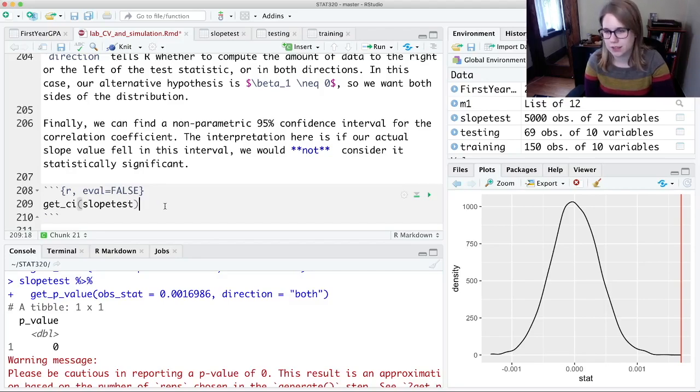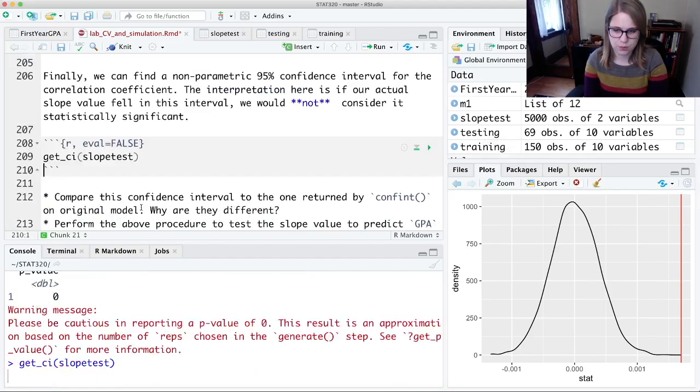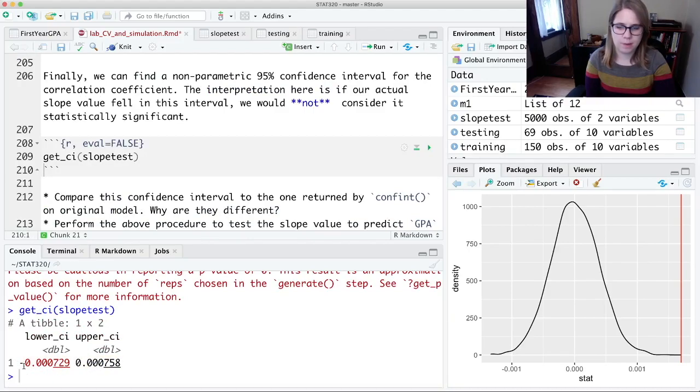So I could get underscore ci on my slope test. That's my 5,000 randomization slopes. And this would be the confidence interval that if it was in that range, I would think that it was not significant. So it's going to be centered around 0, which is our null value. And the middle 95% is like slopes that we could have easily seen if there was no real relationship between the variables. And our value was way outside the interval, and so we're feeling pretty confident that that is different than 0.